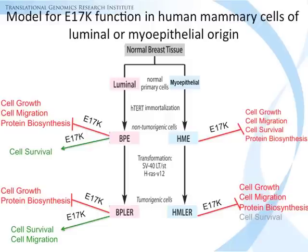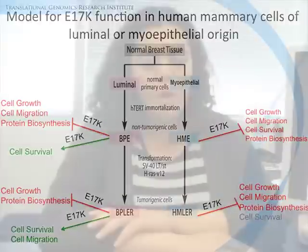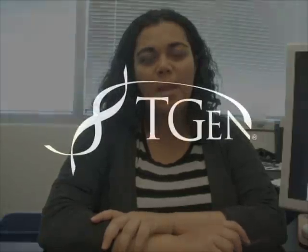We believe that this mutation may be ultimately associated with favorable prognosis. Determining whether the use of PI3 kinase inhibitors or AKT inhibitors in patients with the mutation would be an effective strategy will be an important next step. We hope our video entices you to read our manuscript now published in Human Mutation. We thank you very much for your time and interest, and if you have any further questions, please do not hesitate to contact us. Thank you.